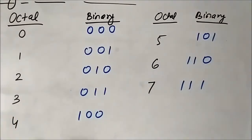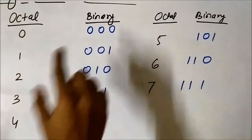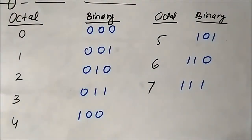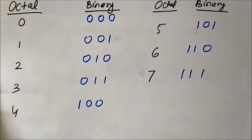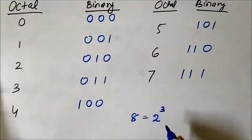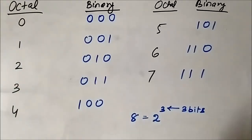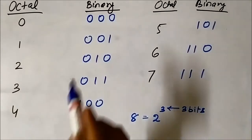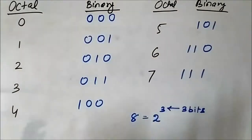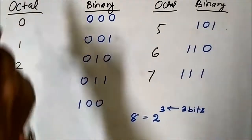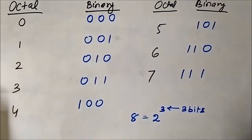We use 3-bit groupings for representing octal numbers. In the octal system, 8 symbols are used from 0 to 7, which equals 2 to the power 3, so we require 3 binary digits to represent each of the 8 octal symbols. The same concept will be used to convert a given binary number into its equivalent octal form.